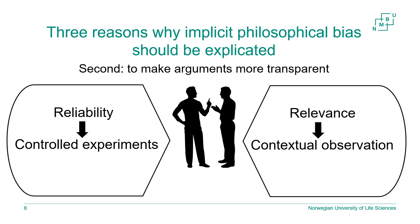Another reason why it is useful to explicate philosophical bias is to make your argument better and more transparent. One way is to simply say you won't trust a result if it doesn't come from controlled experiments. Another, more transparent way is to say: reliability is the most important value in science, so you only trust controlled experiments where you can be sure one factor made a certain change. On the other side, someone could say: relevance is the most important value, so they prefer an observation relevant to their context rather than something reliable but of unclear applicability.